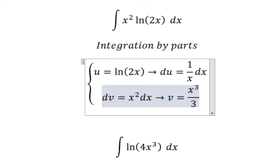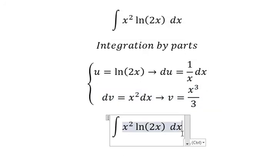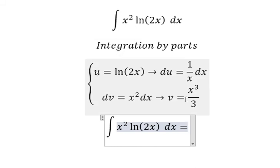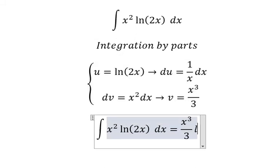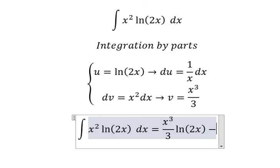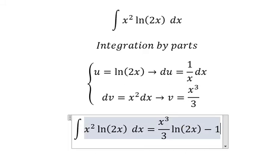So we have u multiplied by v minus du multiplied by v. So x to the power of 3 divided by x, you got x², and we have number 3 we put outside.